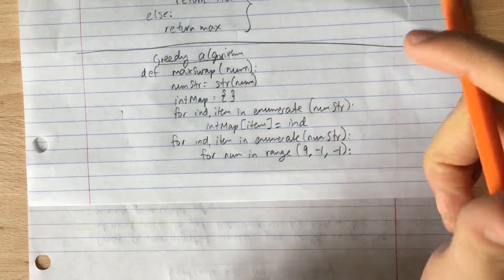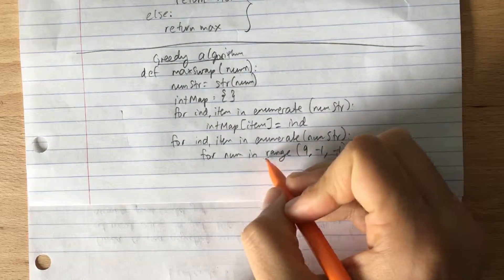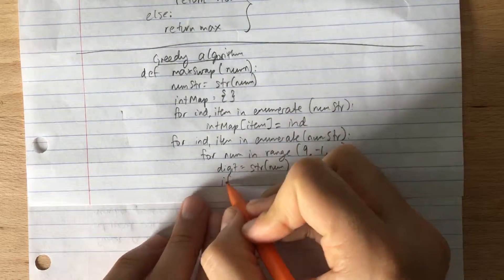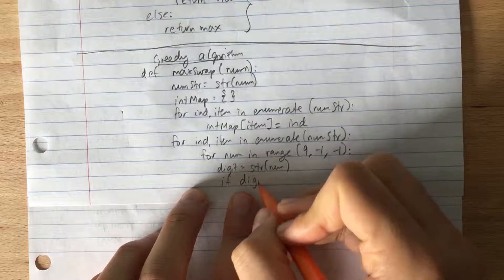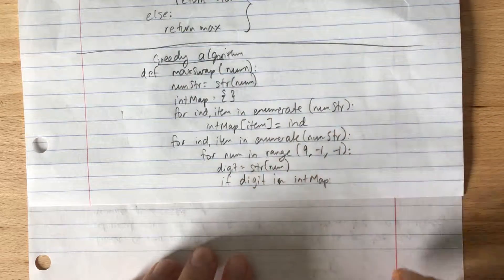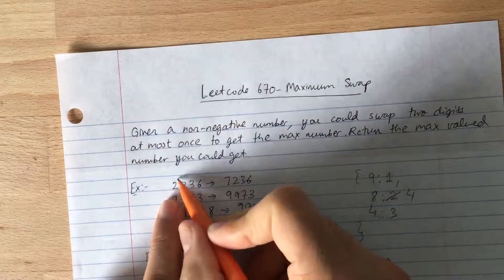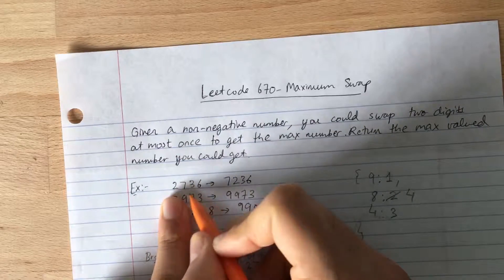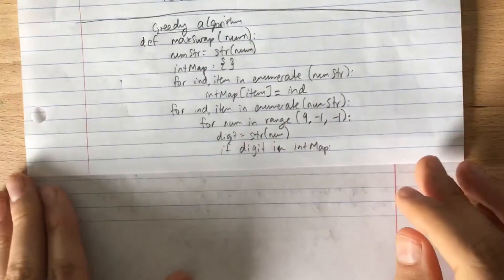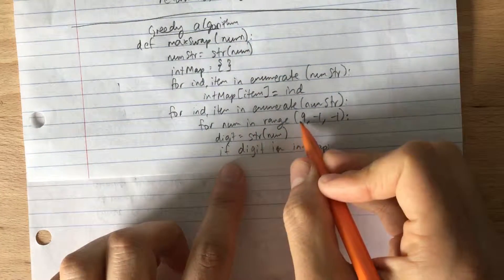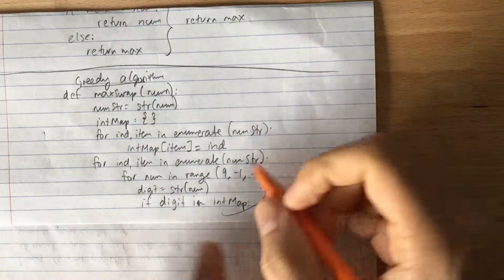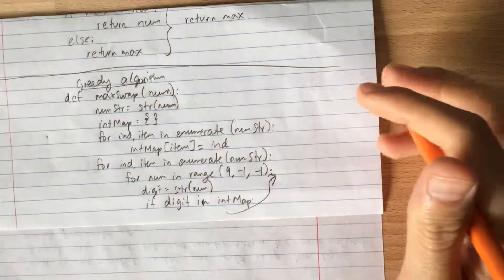One tricky part is we're comparing strings and integers, so we convert: digit = str(num). We check if the digit exists in our given int_map dictionary. Going back to the example 2736: starting at 2, we check whether 9 is in int_map — no. Then 8 — no. Then 7 — yes, 7 is there. So if digit is in int_map, we clearly want to swap.